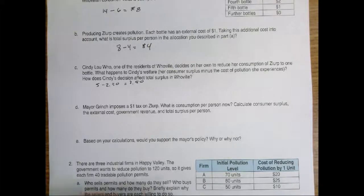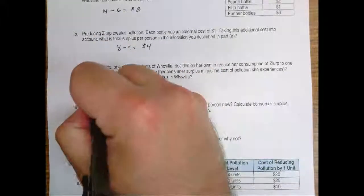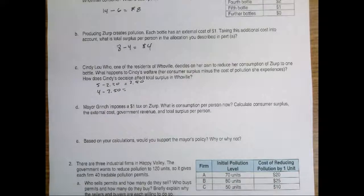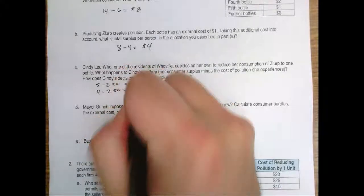When she buys the second bottle, she's willing to pay four and it costs $2.50. So really, if she were to buy that second bottle, she'd have $1.50 in surplus.